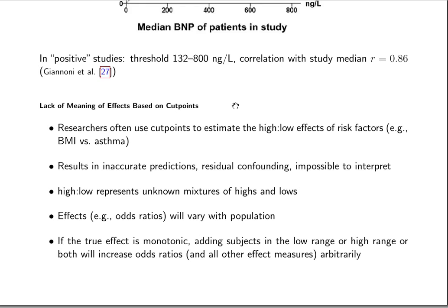There's also a lack of meaning of effects based on cut points. We see, especially in the epidemiologic literature, estimates of high to low effects published. This could be high BMI versus low BMI. Such estimates result in inaccurate predictions, residual confounding because of heterogeneity in the subjects to the left of the cut point and to the right, and it's actually impossible to interpret.